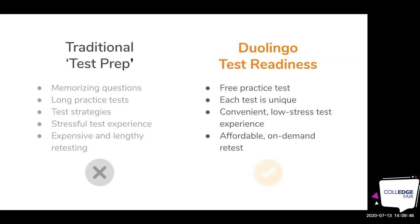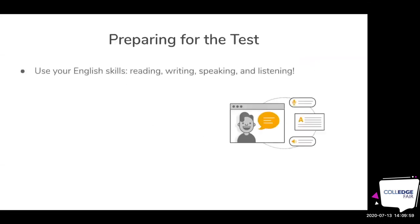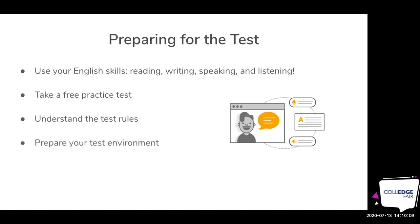This also answers the question of access, because traditional test prep models require a lot of resources and money. With the Duolingo English test, prep is free and the test is much more affordable. Preparing means using your English skills — try to find ways to read, write, speak, and listen. Take our free practice tests. Make sure you understand the test rules. Prepare your test environment — no phone or tablet, have water ready, have power for your laptop, and show your room to confirm you're alone.